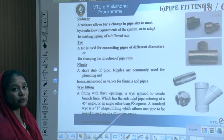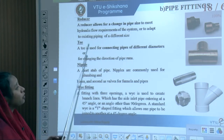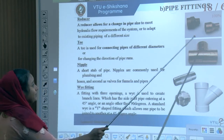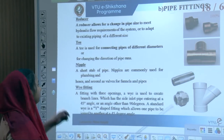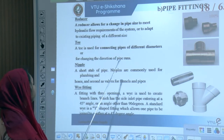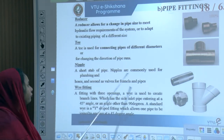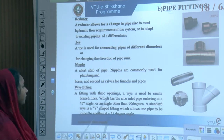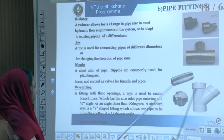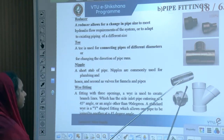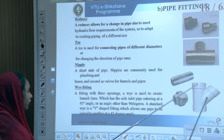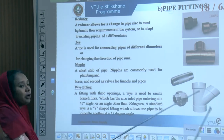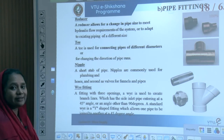A reducer allows a change in pipe size to meet hydraulic flow requirements or to adapt to existing different sizes. A T-shape fitting is used for connecting pipes of different diameters or for changing the direction of pipe runs. A nipple is a short stub of pipe, commonly used for plumbing and hoses. A Y-fitting has three openings and is used to create a branch line with a side inlet pipe entering at a 45-degree angle — a standard Y-shape fitting joining one pipe to another at 45 degrees.